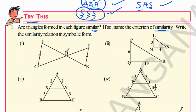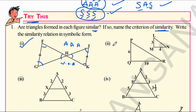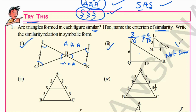First pair: triangles FGH and IHK. Two sides are parallel, so alternate interior angles are equal, and the two triangles also share vertical opposite angles. Therefore, by AAA similarity, triangles FGH and IHK are similar. Second pair: triangles LMN and PQR are not similar because their corresponding sides are not proportional — 3/6 is not equal to 4/10.